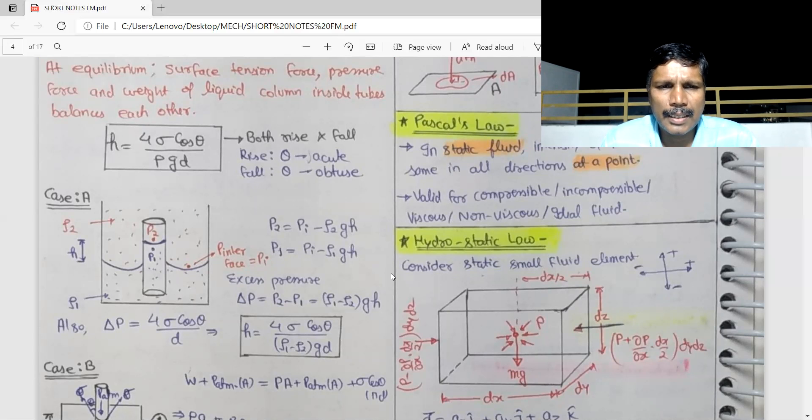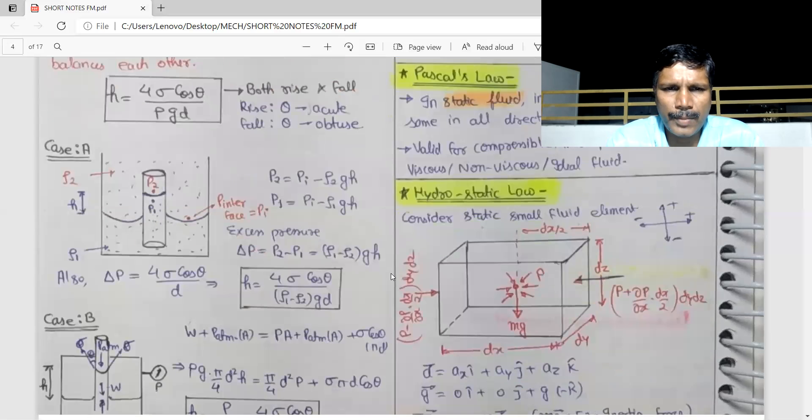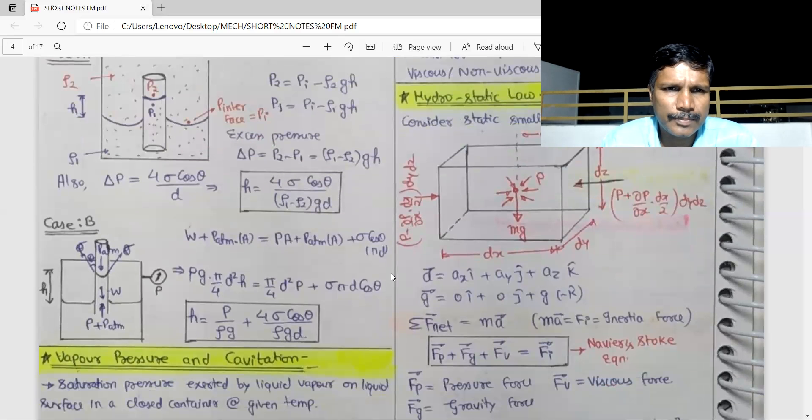If we look at case B, we see W plus P atmospheric pressure times A. This is case B. We see h equals P by rho g plus 4 sigma cos theta by rho g d. If we add P by rho g, this is a peculiar case.